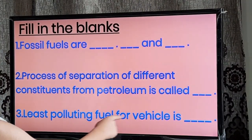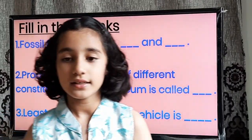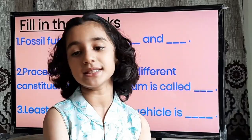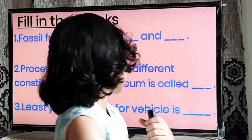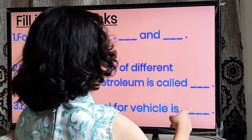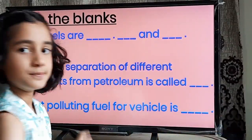Question number 3: Least polluting fuel for vehicle is dash. I will give you 3 seconds — your time starts now. Your time is up. The correct answer is: the least polluting fuel for a vehicle is CNG.